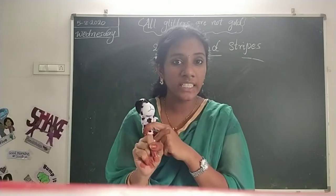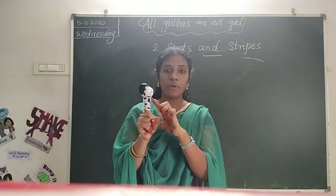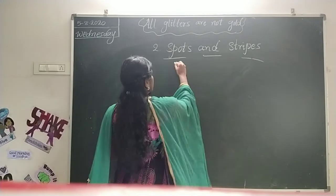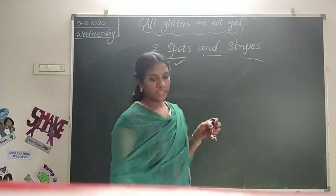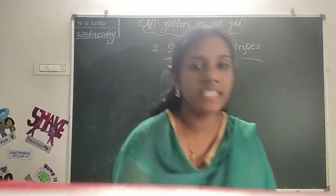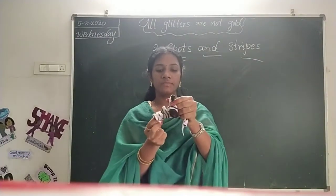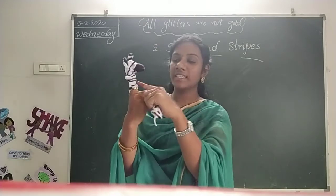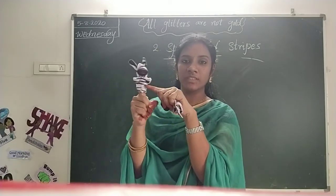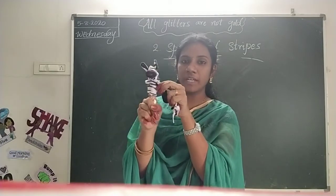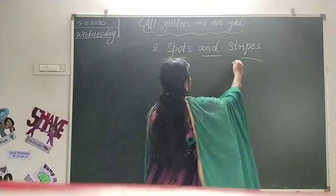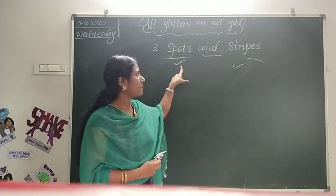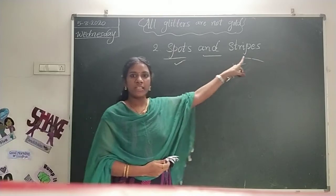Do you observe the cheetah? It has spots. And here, see what is this animal? Zebra. It has stripes. The zebra has stripes. So now we know the difference between spots and stripes.